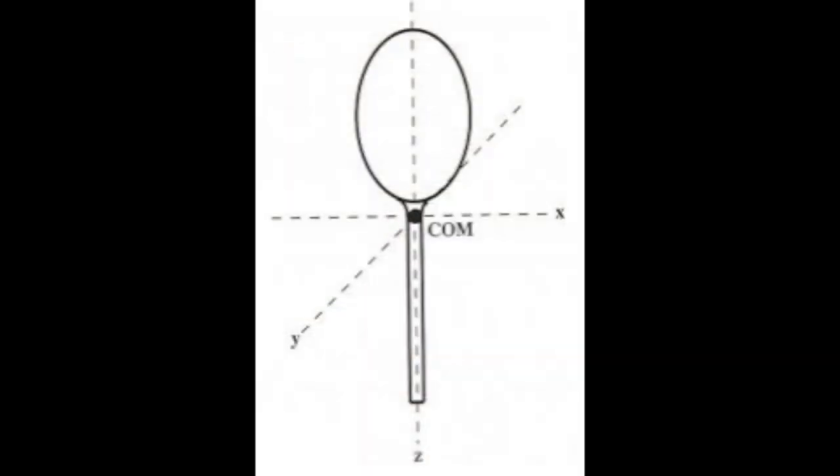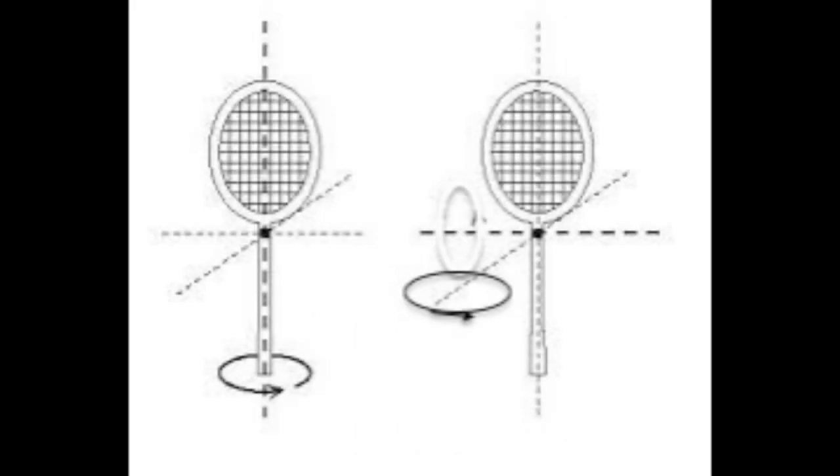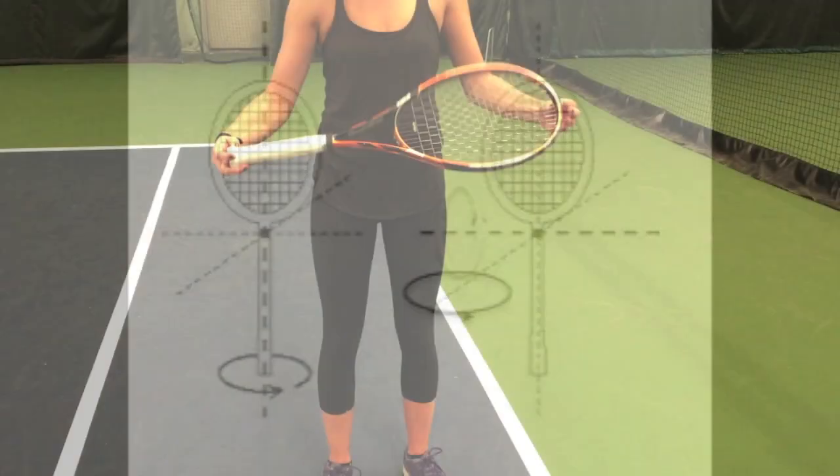This is because of the three axes a tennis racket has. When spun around two of its axes it is able to maintain its rotation.